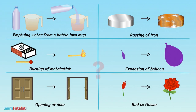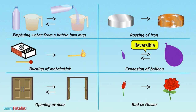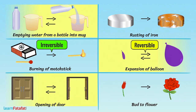Identify the reversible and irreversible changes from the given examples. Out of the given examples, reversible changes are: emptying water from a bottle into a mug, expansion of a balloon, and opening of a door. The irreversible changes are: burning of a matchstick, rusting of iron, and bud to flower.